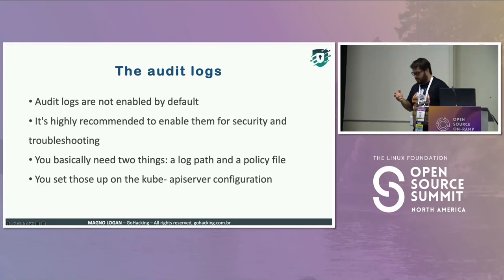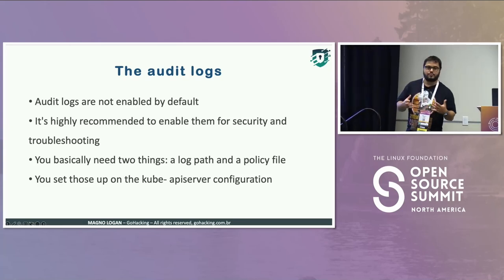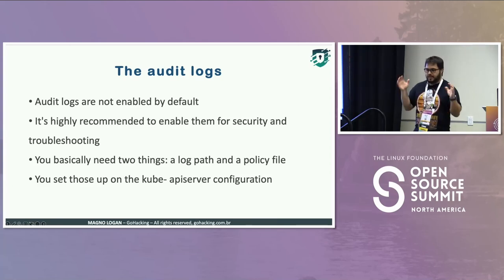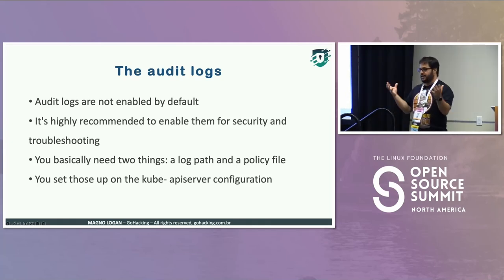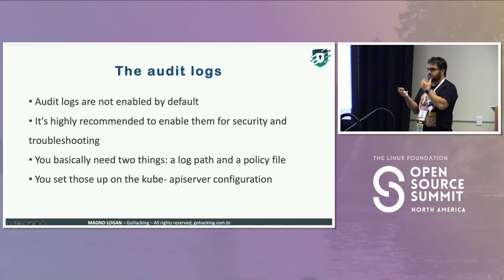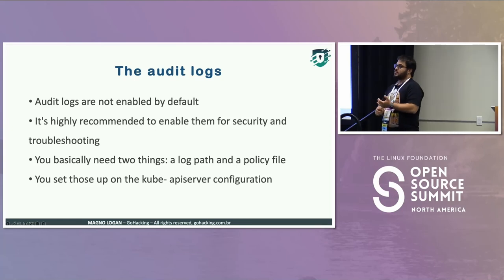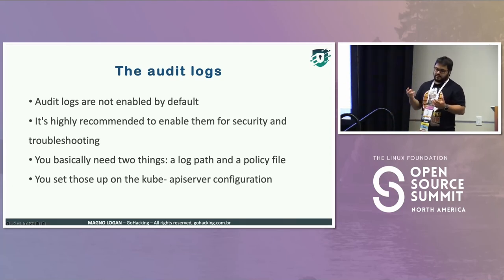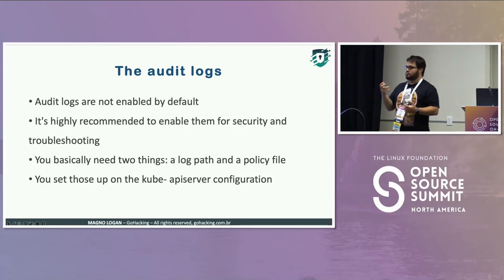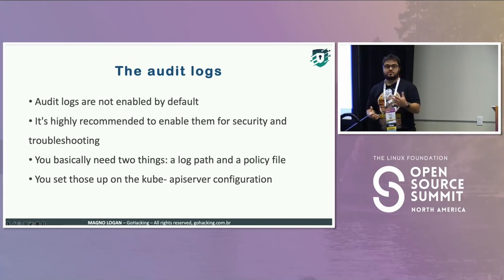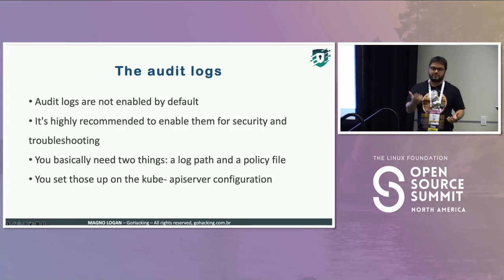Before I wrap up, my recommendation if you're starting your Kubernetes or Kubernetes security journey — I like to mention what I call the Kubernetes security triad: three basic things. First is image scanning — you need to scan your images before deploying them to your cluster, not just for package scanning but also libraries and dependencies, especially if you're not doing something like an SCA, Software Composition Analysis. The second thing is implementing proper admission control. Kubernetes has one — it used to be the pod security policy, now it's pod security admission. You also have third-party tools such as OPA (Open Policy Agent) or Kyverno.